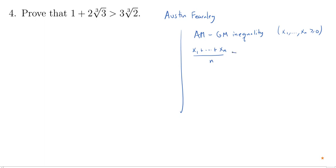Then the average of those numbers, that's where the AM is coming from, this is the arithmetic mean, is going to be greater than or equal to the nth root of the product of those numbers. And this is on the right hand side, what's called the geometric mean.